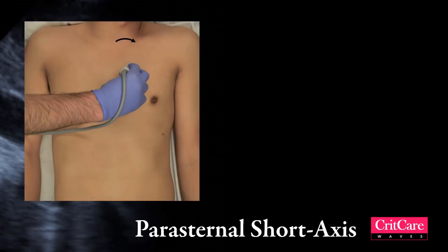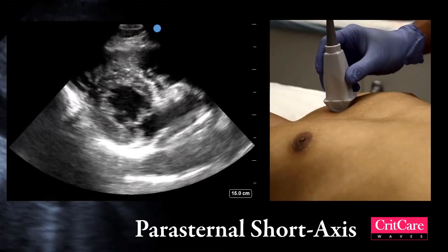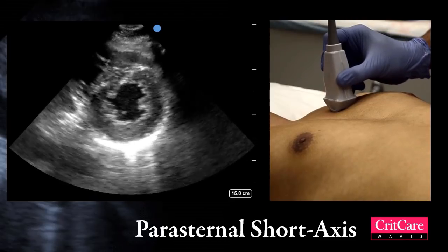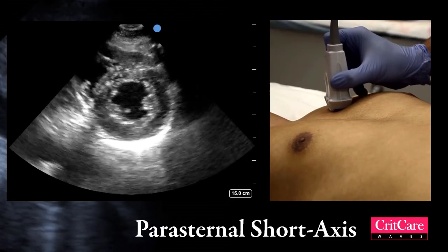Let's move on to the parasternal short axis. To get a parasternal short axis image, find the parasternal long axis and rotate the probe 90 degrees clockwise, so that the marker on the ultrasound probe is facing the left shoulder.